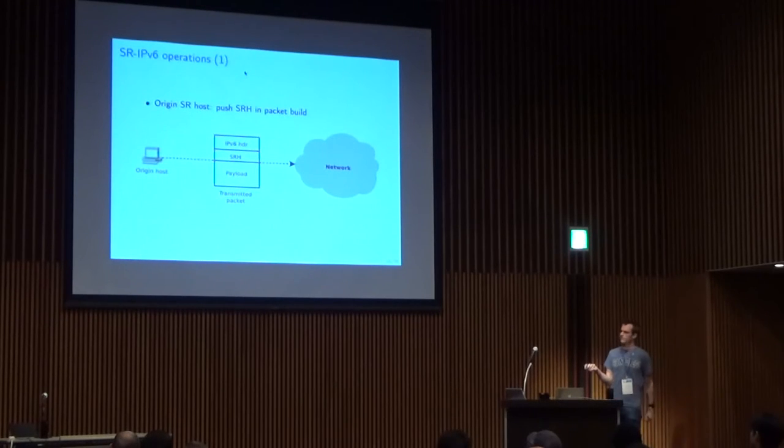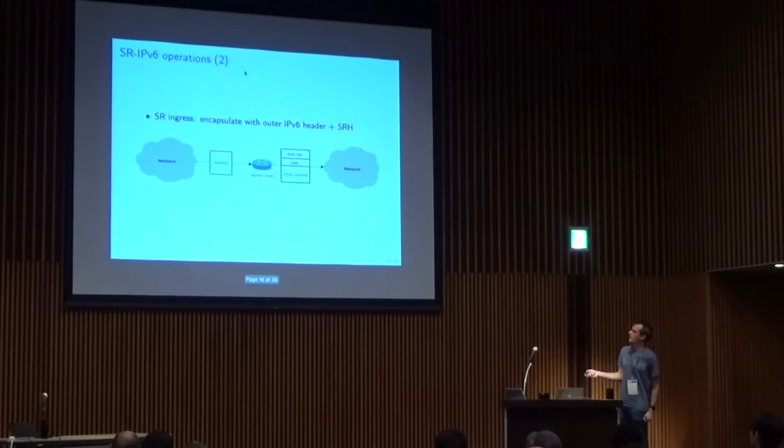The second operation is when it is an ingress node that inserts an SLRH onto packets. An existing packet arrives at the ingress node, and according to some classification, the ingress node will encapsulate the packet into an outer IPv6 header with the given SLRH, and the original packet is not modified.